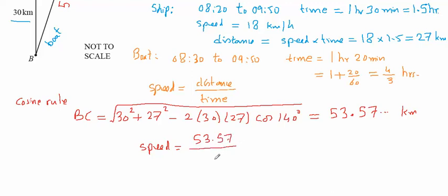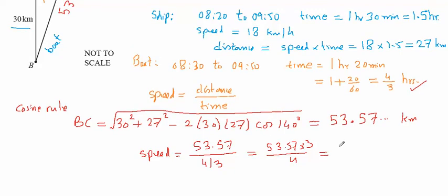Distance is 53.57 and we divide this by the time which is 4 over 3. And then using calculator we can do it: 53.57 times 3 divided by 4, and we will get 40.1775. So the rounded answer to 3 significant figures will be 40.2 kilometers per hour. So this is the answer for the first part which is 5 marks.